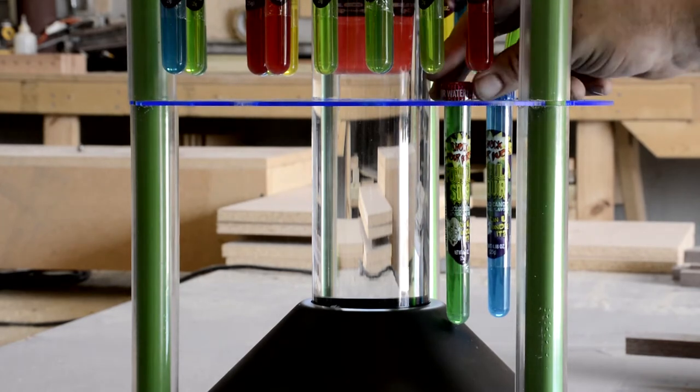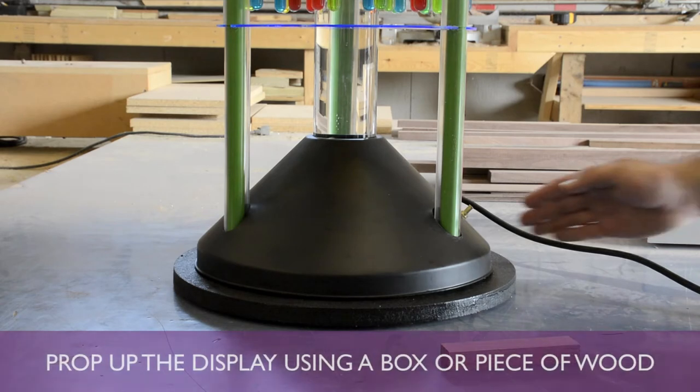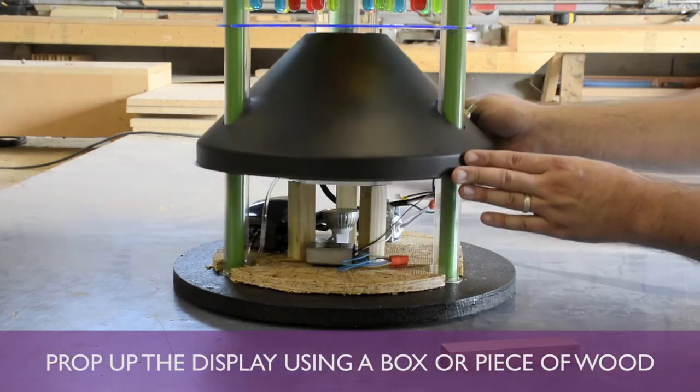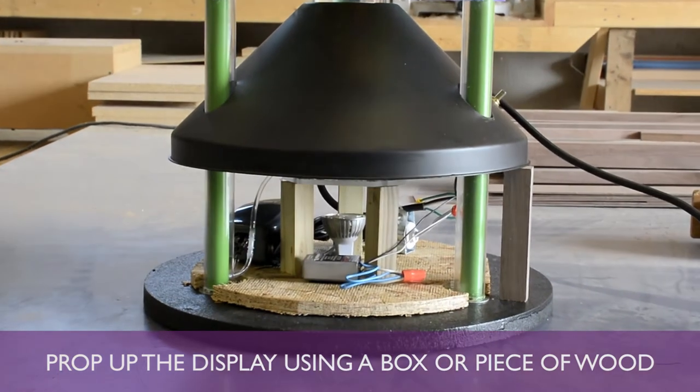Next, remove all test tubes from the bottom shelf. Gently pry up on the black cone and raise it to the bottom of the shelf. You can use a small cardboard box or a piece of wood to hold up the cone.